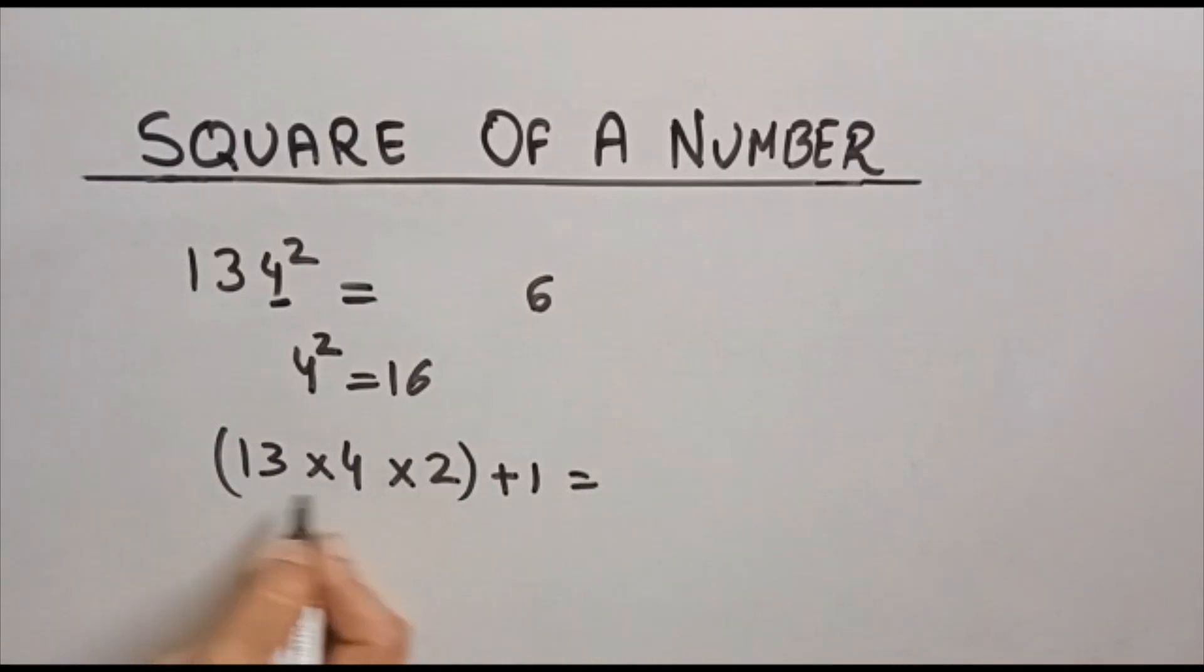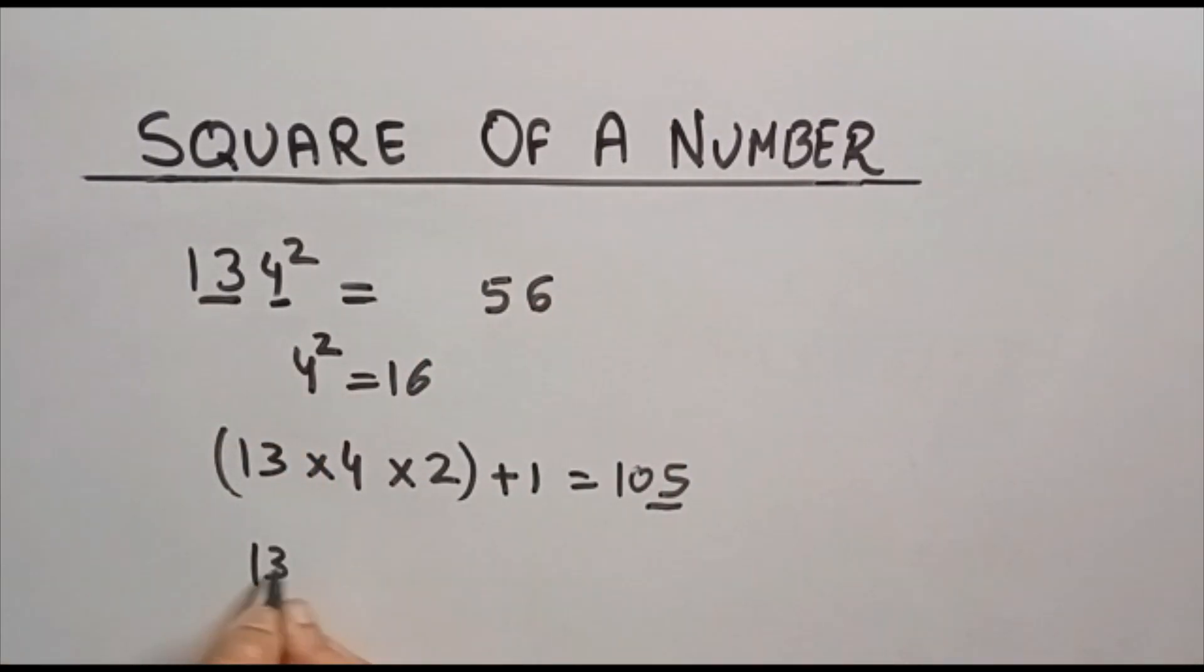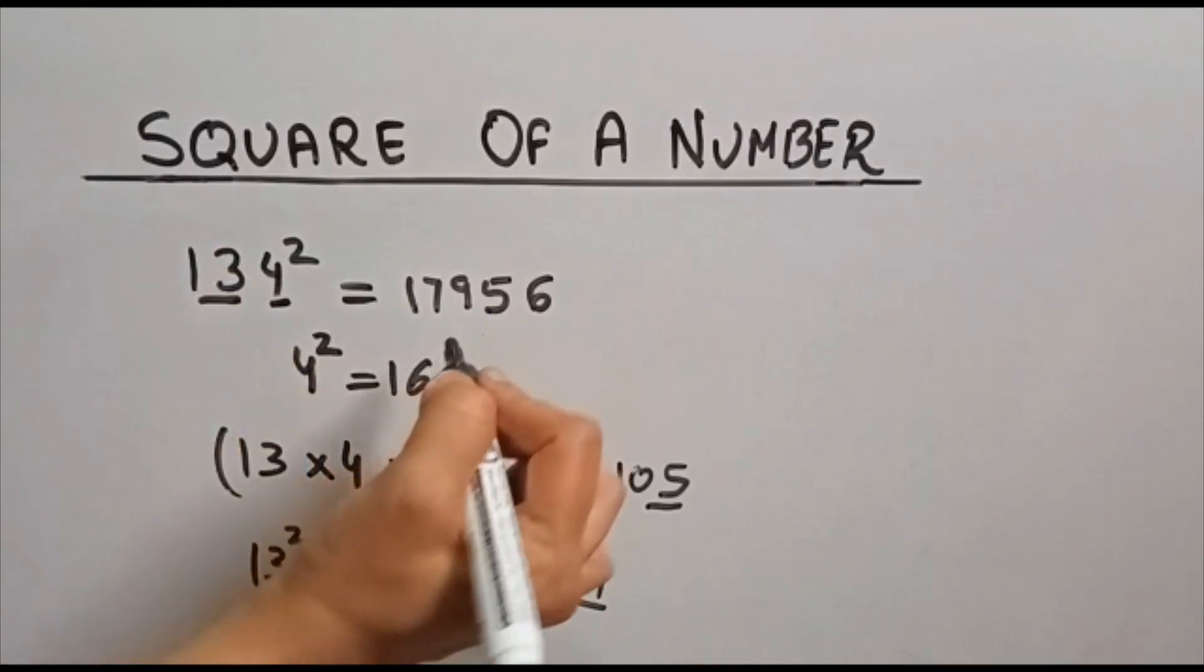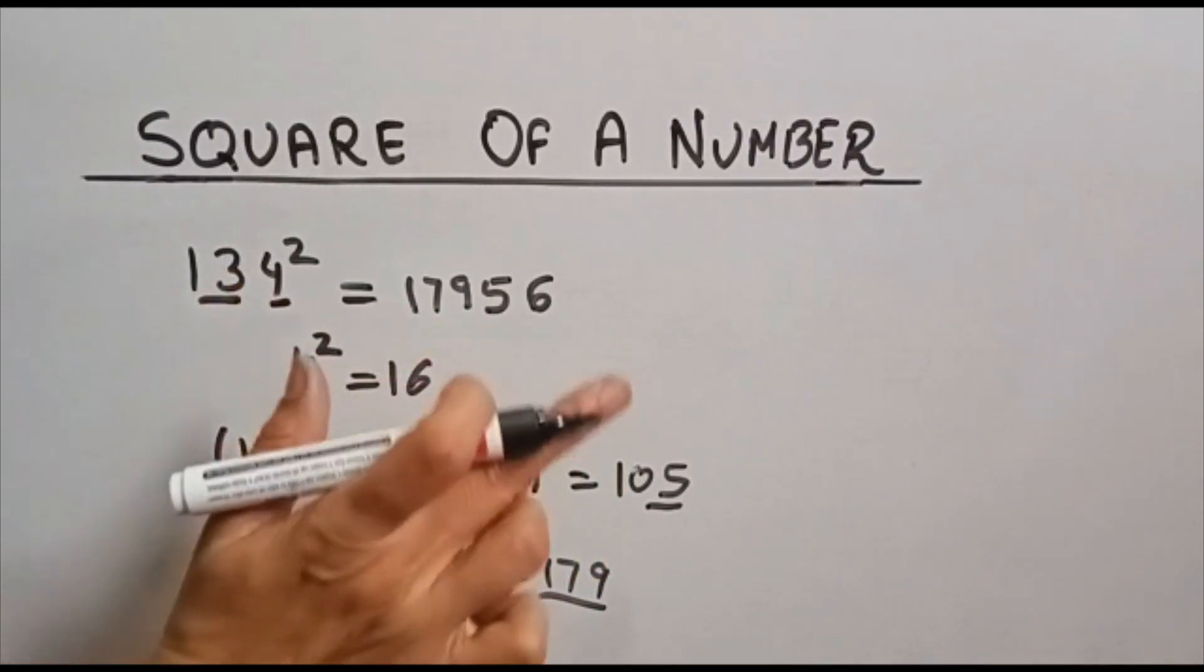So 13×4 is 52, times 2 is 104 plus 1 is 105. I am writing this 5 here. Now this second part which is 13, I am taking square of it which is 169 plus 10, so 179. Write this here at the left hand side of this 56. This is the answer of square of 134.